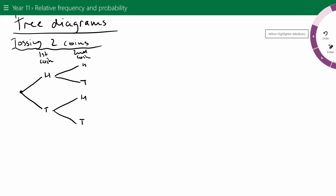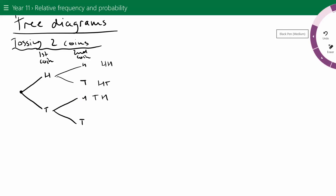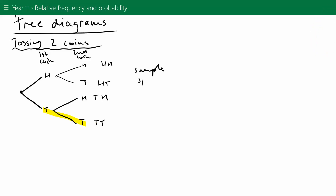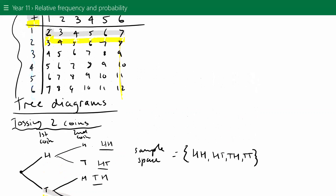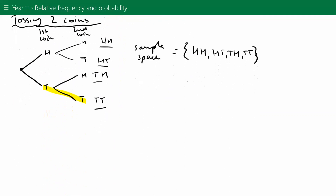Going along the branches: head and head gives HH, head and tail gives HT, tail and head gives TH, and tail and tail gives TT. So the sample space is still HH, HT, TH, TT in curly brackets — the same result as what we got with the table. We can use tables or tree diagrams to find the sample space of a multi-stage event.